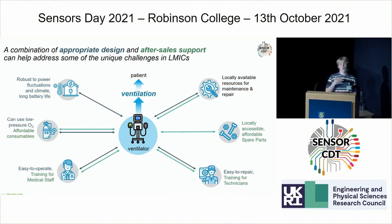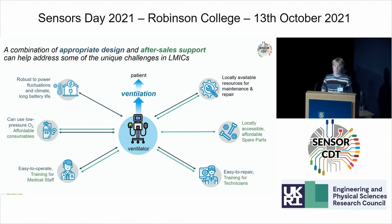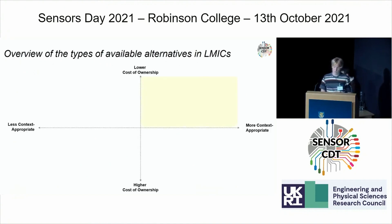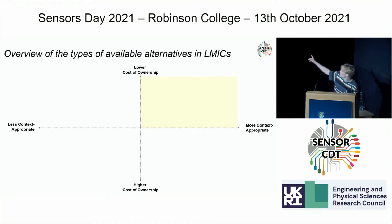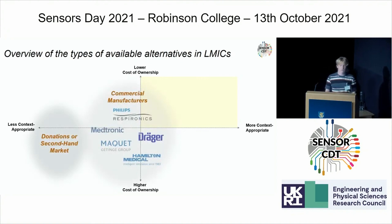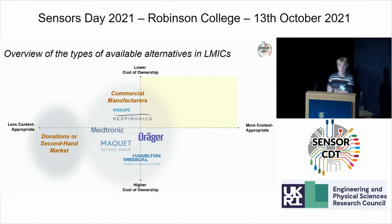With that knowledge, we spoke to the design team and suggested for OBSI that a combination of appropriate design, after-sales support, and training as part of the business model would be beneficial. Looking at alternatives for ventilators in LMICs, the ideal ventilator would be in the top-right quadrant — low cost of ownership and most context-appropriate. Currently, donations and the second-hand market have low cost of ownership but aren't context-appropriate, while commercial manufacturers have higher cost and design primarily for high-income countries.